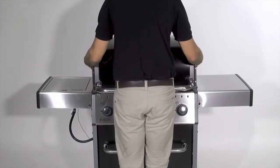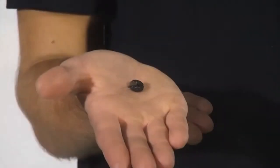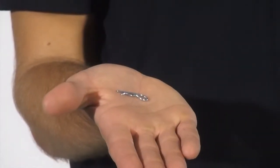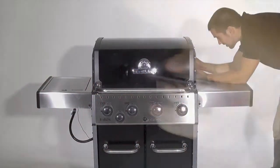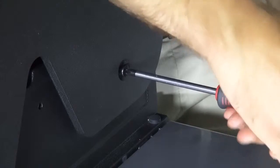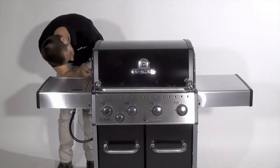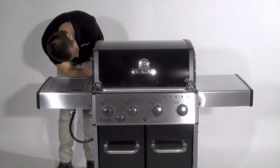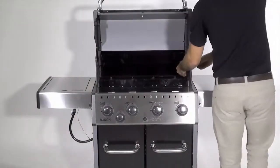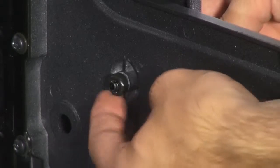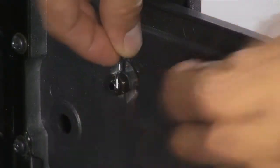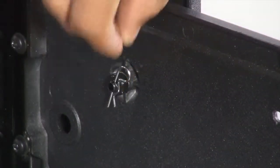Attach the lid to the cook box using the bolts, nuts, and pins provided. Install the bolt into the cook box and tighten with your screwdriver. Secure the assembly using the cotter pin.